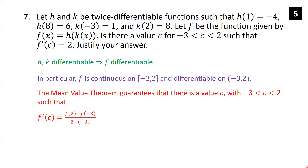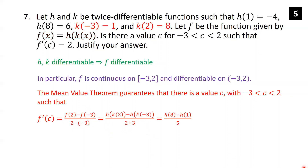The MVT guarantees a value c with f prime(c) equals (f(2) minus f(negative 3)) over (2 minus negative 3). f(2) equals h(k(2)) and f(negative 3) equals h(k(negative 3)), and 2 minus negative 3 is 5. k(2) equals 8, so h(8) equals 6. k(negative 3) equals 1, so h(1) equals negative 4. So we get (6 minus negative 4) over 5, which is 10 over 5, equals 2. Yes, there is such a value c.